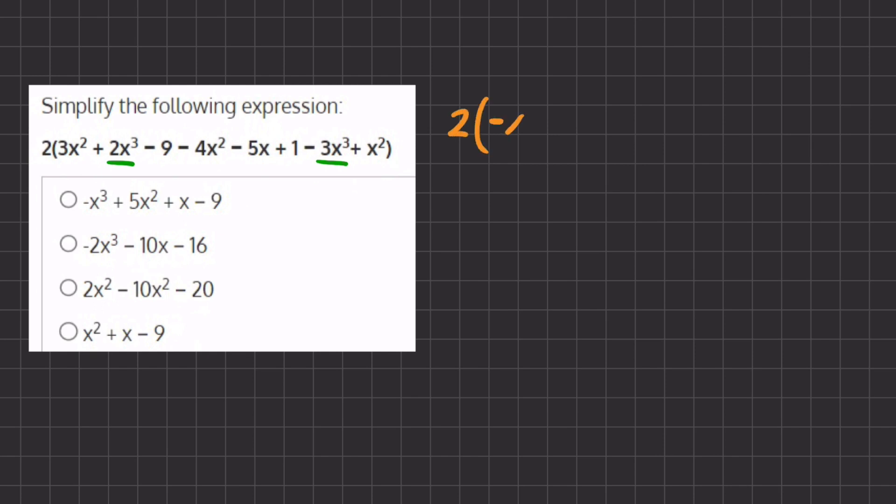and we get a negative x to the power of 3. Because when we combine 2 and negative 3, you get a negative 1.